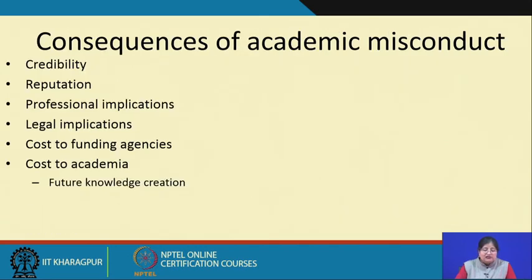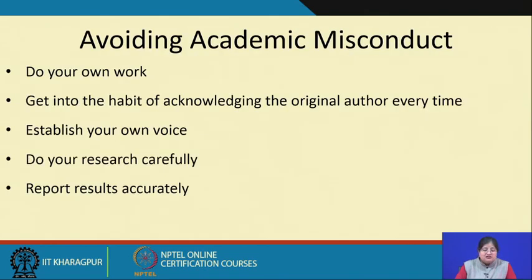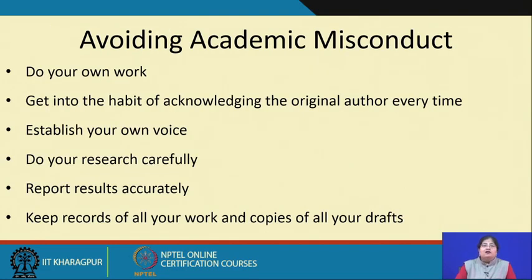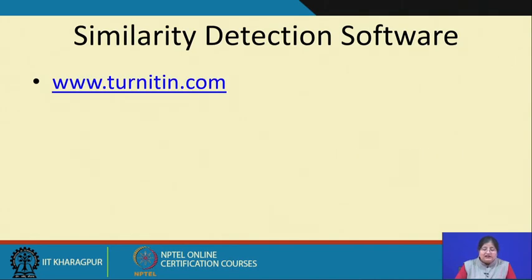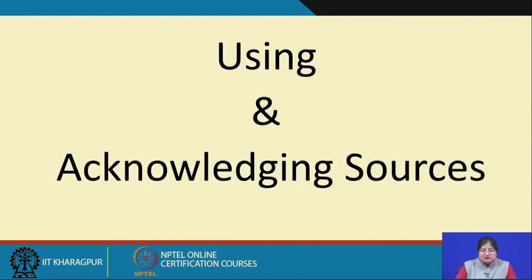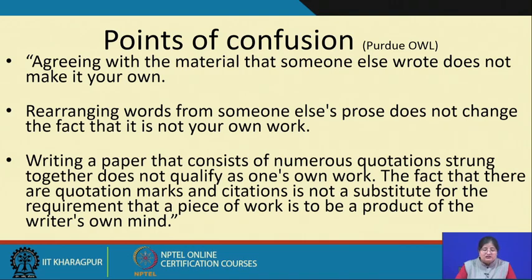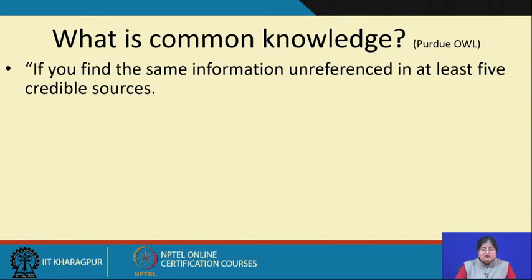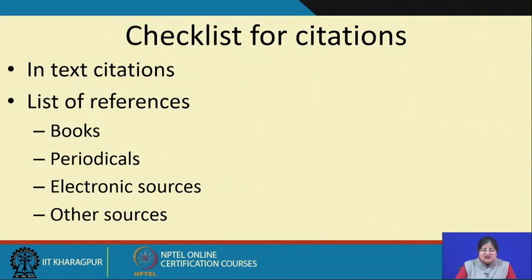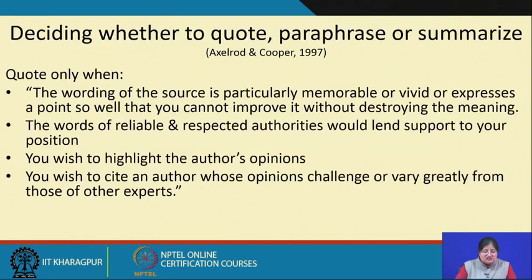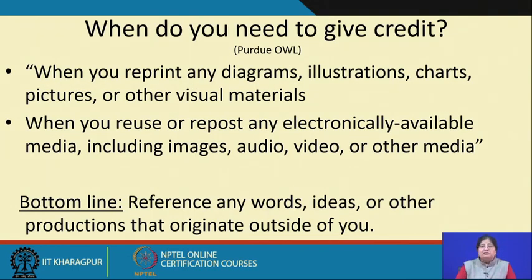We discussed the consequences of academic misconduct, avoiding academic misconduct — doing your own work — and I gave you references for the slides on academic integrity. I did not get a chance to show you the similarity detection software for paucity of time, but you can go through it. Then we talked about using and acknowledging sources, points of confusion, when do you not need to give credit, what common knowledge is, when do you need to give credit, deciding whether to quote, paraphrase, or summarize, some special concerns and quotations, and the bottom line: any time you are confused as to whether you need to give credit or not, you should reference any word, idea, or production that generates from you.